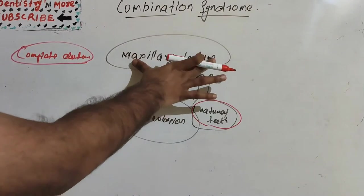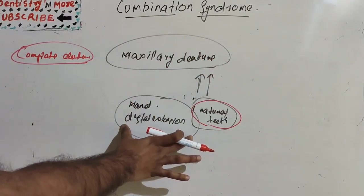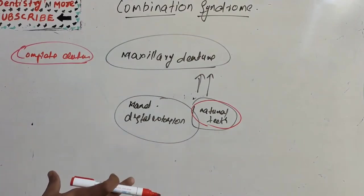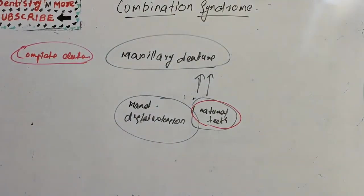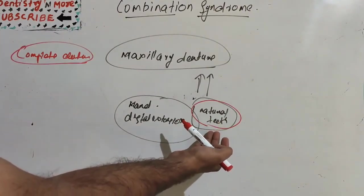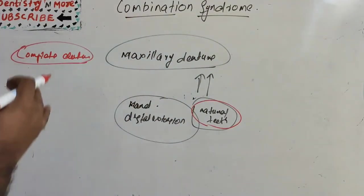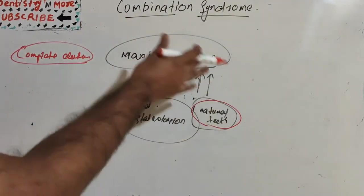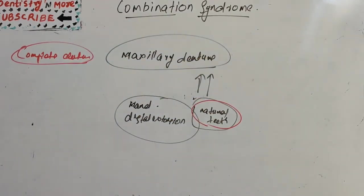So we have a complete denture here and a distal extension removable denture here. In such conditions, the upper anterior ridge faces a problem because of continuous pressure from the natural teeth in the lower anterior side. Ultimately, it becomes a vicious cycle with many changes happening in the oral cavity. This is known as combination syndrome.